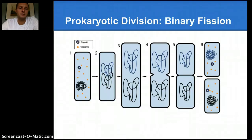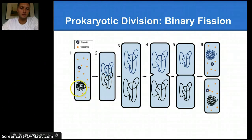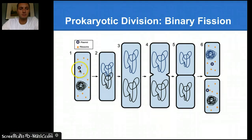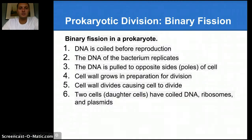IB requires you to know that prokaryotes divide by binary fission. Basically what this entails is that we have a single cell, and it's going to divide and split into two different cells. As you would expect, the DNA is a single copy coming from a single original source, and so our two resulting cells are going to have the exact same DNA. In this image, we can see here's our original DNA, here's our original cell, with ribosomes and plasmid. The blue is a copy of the original DNA. As the cell begins to divide, we end up with two cells that have their own strands of DNA, but they're exact copies of each other. You are not required to know the steps of binary fission, but you do need to know that prokaryotes divide by binary fission.